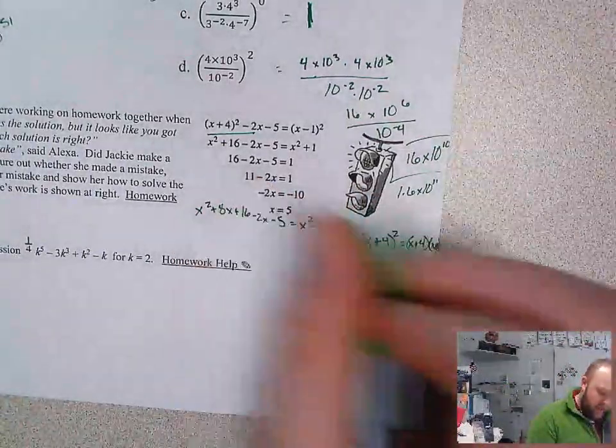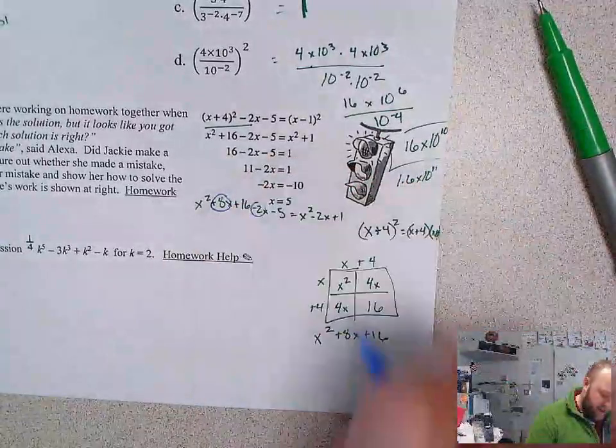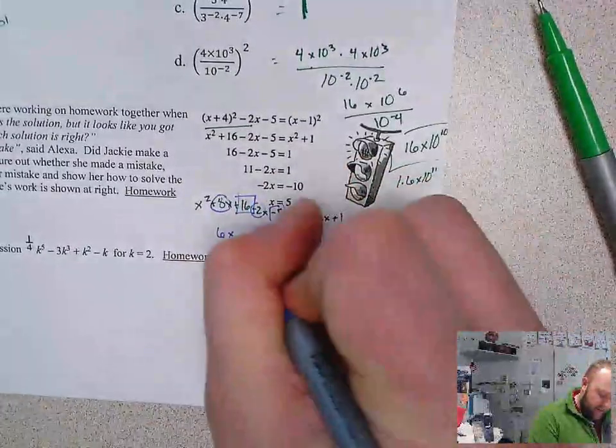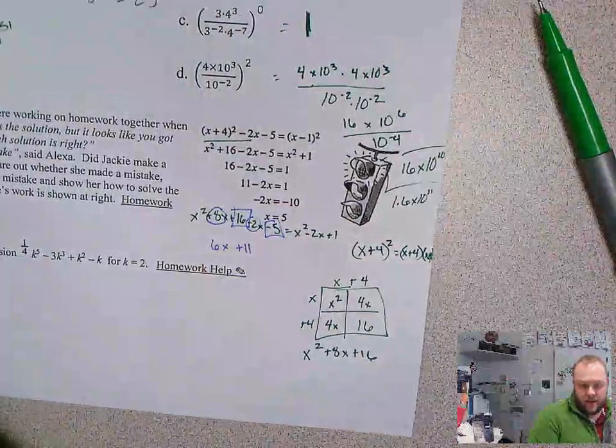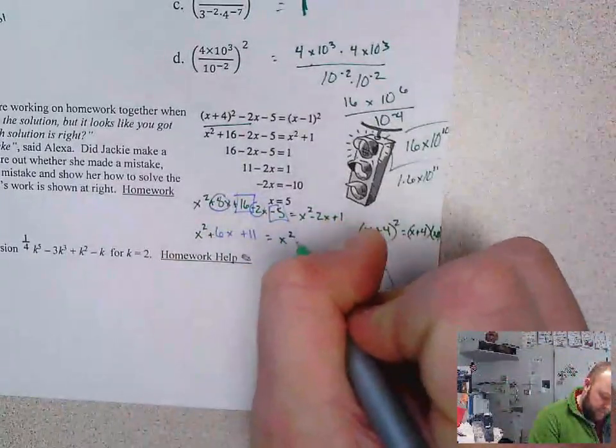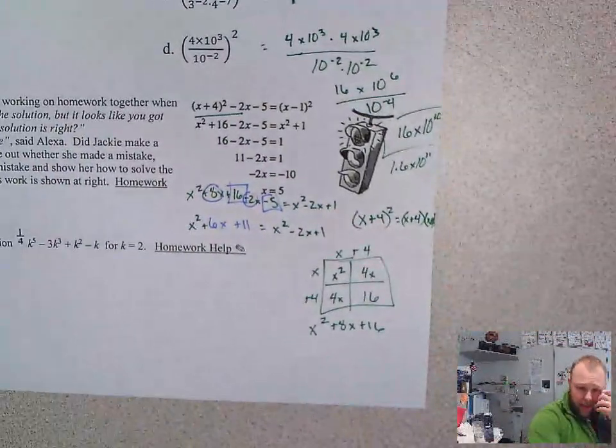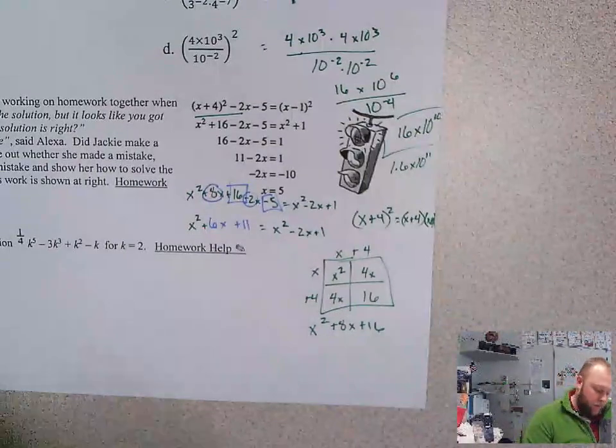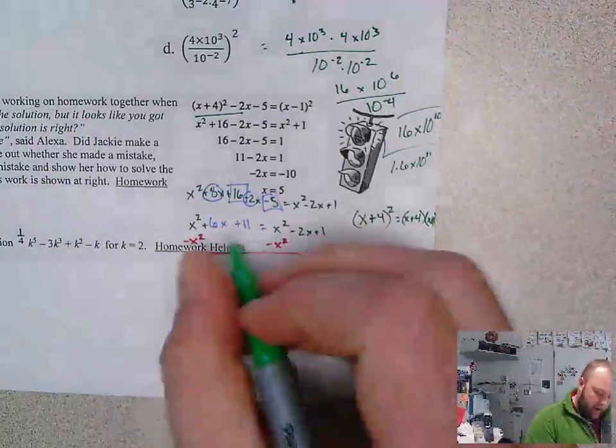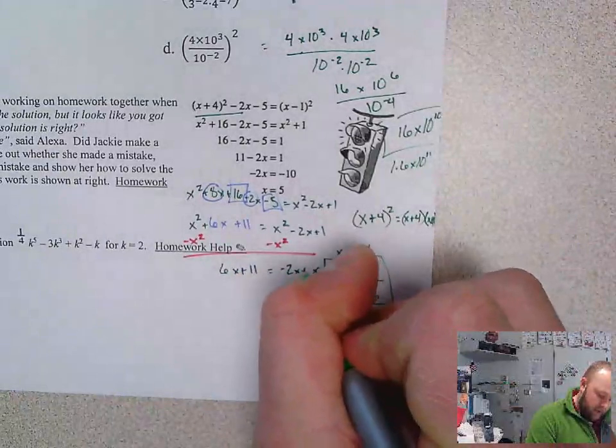Now let's solve. First thing I'm going to do is combine my like terms. I have 8x and negative 2x. So that is 6x. I also have 16 minus 5 which is 11. Then I still have my x squared on each side. Which whenever I have the same value on each side, I can subtract it out. Refresher from our algebra tiles earlier this year. Now I have 6x plus 11 equals negative 2x plus 1.